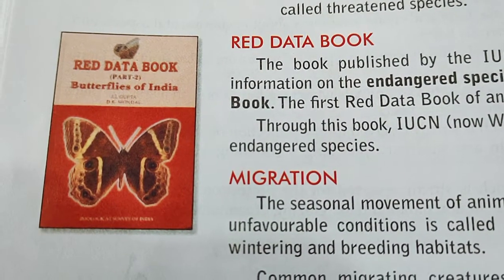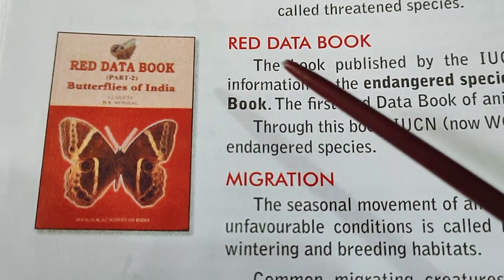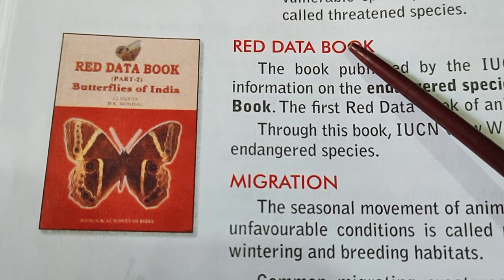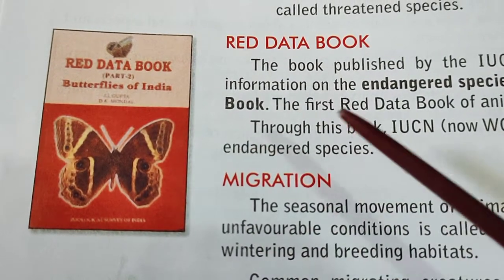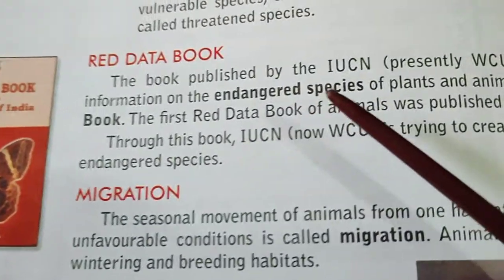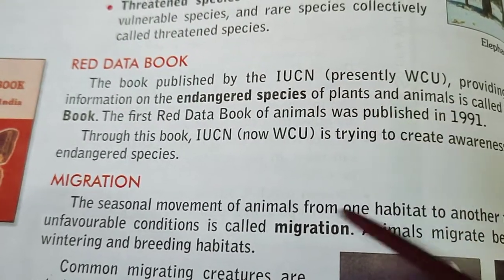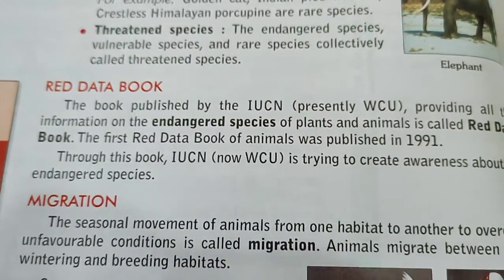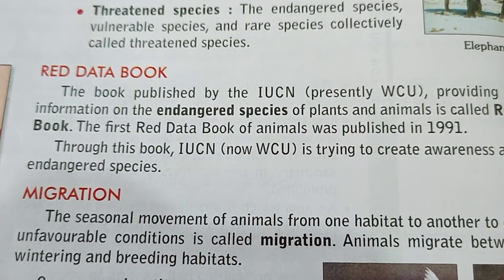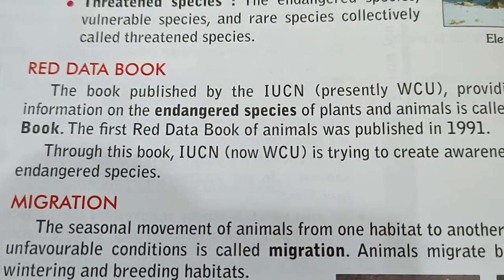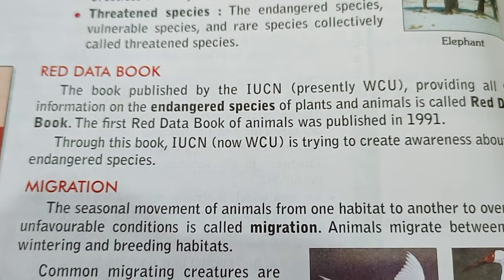Related to this topic, today we are going to read about the Red Data Book. This is the book published by the IUCN, presently known as WCU, providing all the information on the different endangered species of plants and animals.